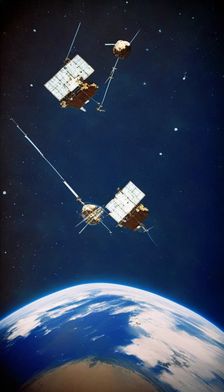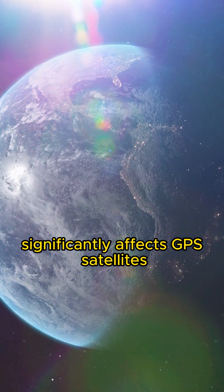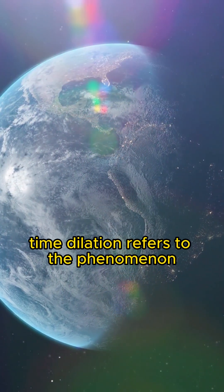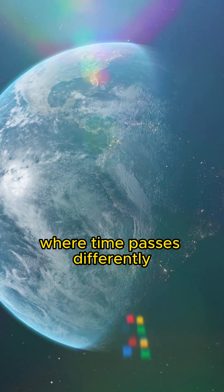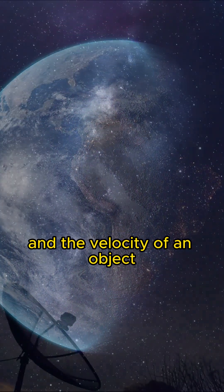In Einstein's theory of relativity, one lesser-known fact is that time dilation significantly affects GPS satellites. Time dilation refers to the phenomenon where time passes differently depending on the strength of gravity and the velocity of an object.